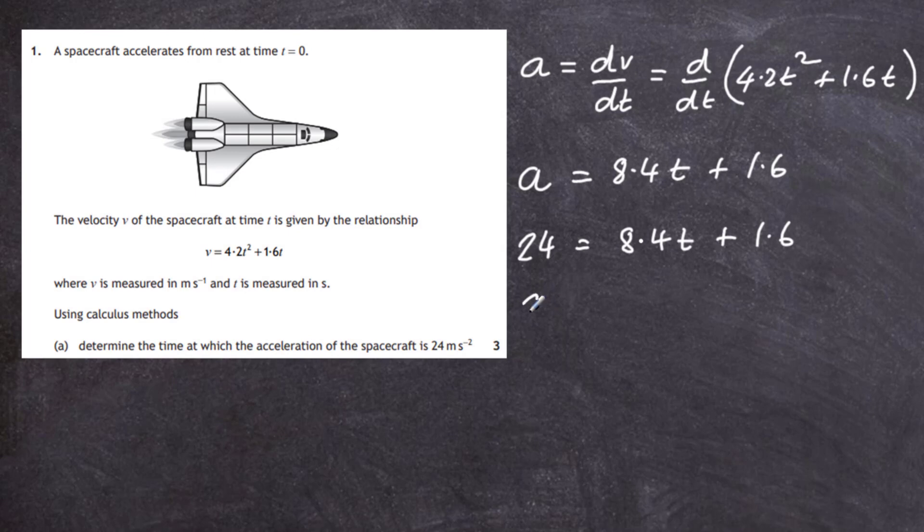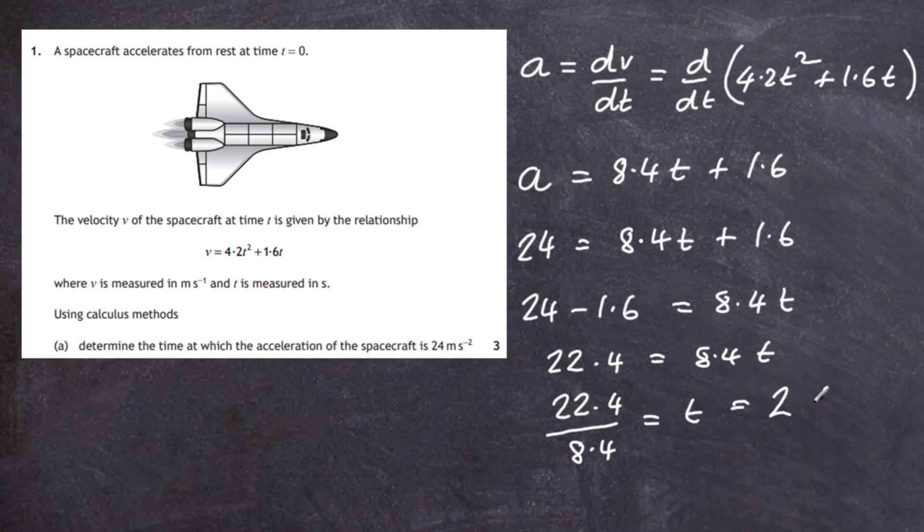Bring over the 1.6 and we're left with 8.4t. 24 minus 1.6 is 22.4, which equals 8.4t. Divide through by 8.4 and the time comes out to be 2.67, which we can round to 2.7 seconds.